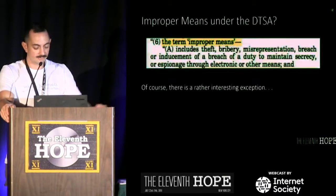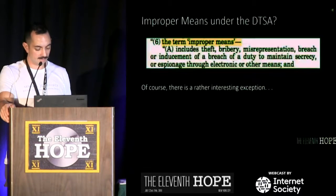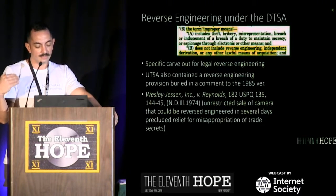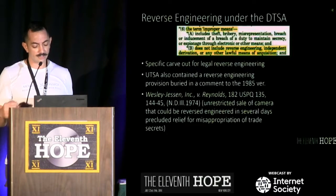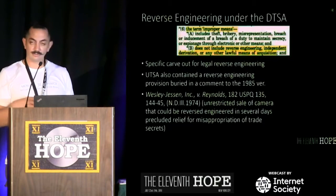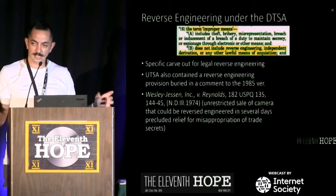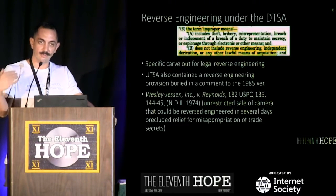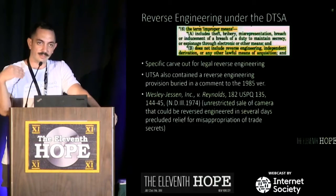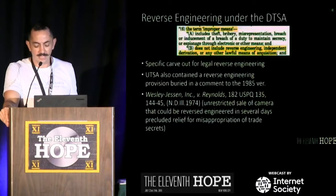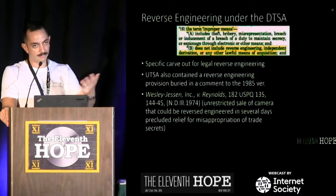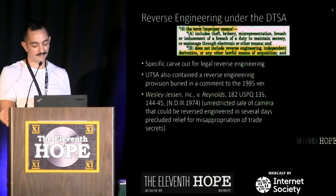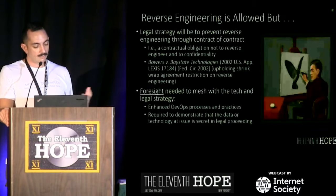There is one interesting exception: reverse engineering is specifically carved out. The term 'improper means' does not include reverse engineering, independent derivation, or any other lawful means of acquisition. This carve-out created quite a hullabaloo when the law was passed. It actually existed as a comment under the Uniform Trade Secrets Act, which most states have had passed. Reverse engineering has been protected under the law going back to at least the 1960s and 70s.